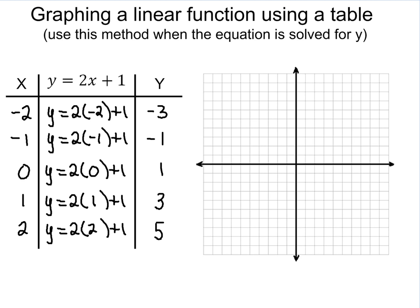Once we have these values, we actually want to graph these points. So what we're going to do is we're going to take negative 2, negative 3, and we're going to go over negative 2. So 1, 2, and down 3. Put a point there.